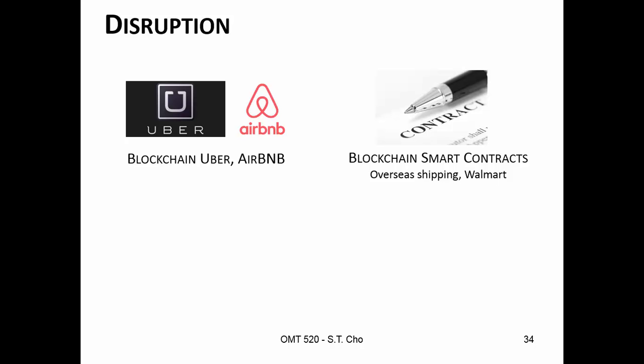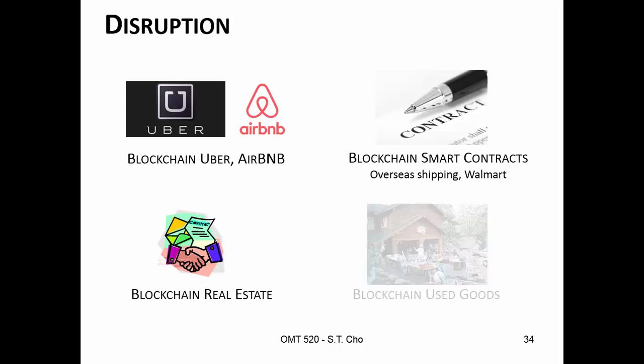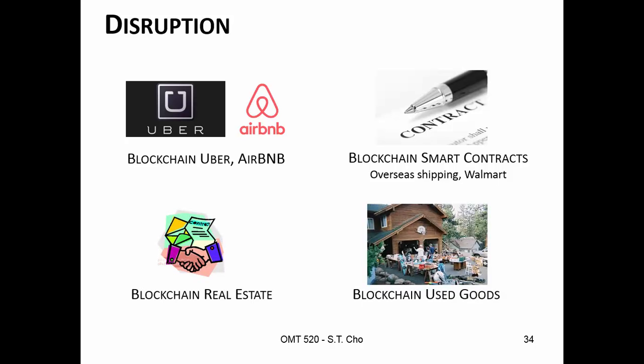Smart contracts are a big thing right now, especially with regards to shipping things overseas. Real estate is a good area to remove middlemen. And what about used goods, the eBays and stuff like that? Just do it yourself.